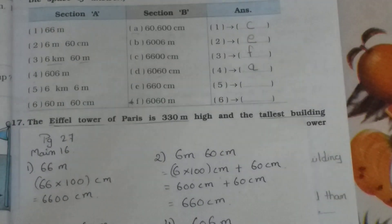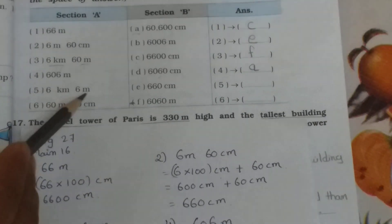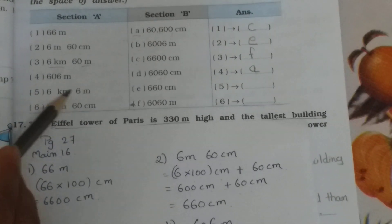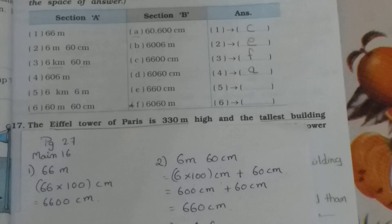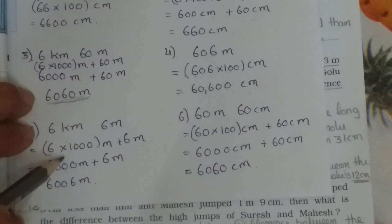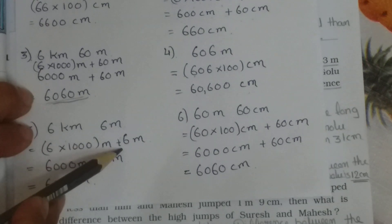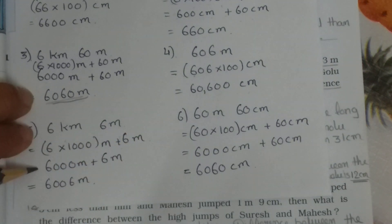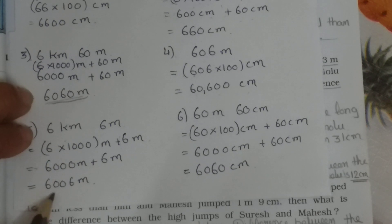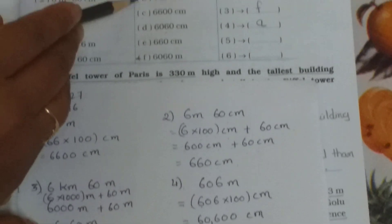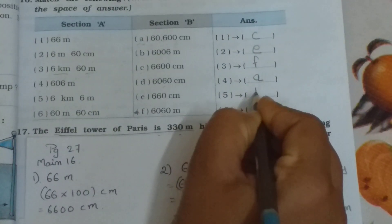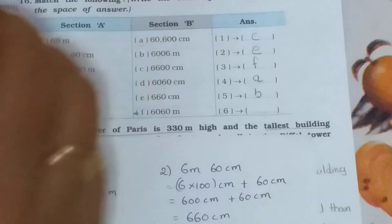Fifth one: 6 kilometer, 6 meter. Again kilometers are present, so convert into meters. 6 multiplied by 1000 is 6000 meters, plus 6 meters equals 6006 meters. Find it — the answer is B. Write down B for the fifth one.